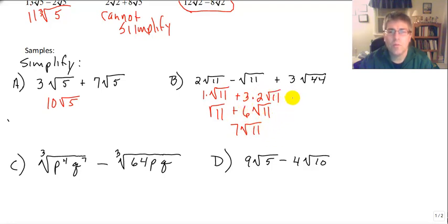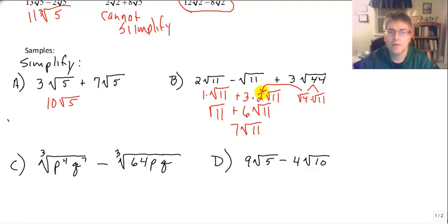So we can do more simplifying by taking that square root of 44 and splitting it into the square root of 4 and the square root of 11, which gave us that factor of 2.